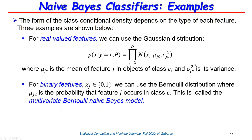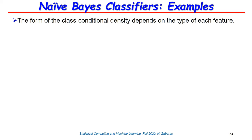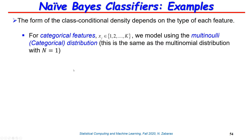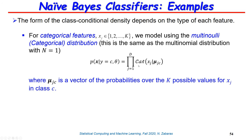For binary features where each xj can take value 0 or 1, the conditional distribution of x given y is a product over features of Bernoulli distributions. We only need the parameter mu_jc, which tells us the probability that feature j is on given class c. The probability of it being off is 1 minus mu_jc. For the discrete case where features can take capital K values, we use categorical distributions in the factorization.